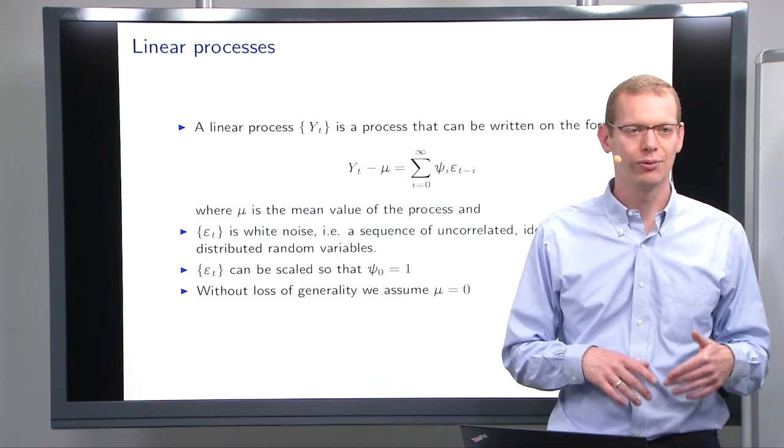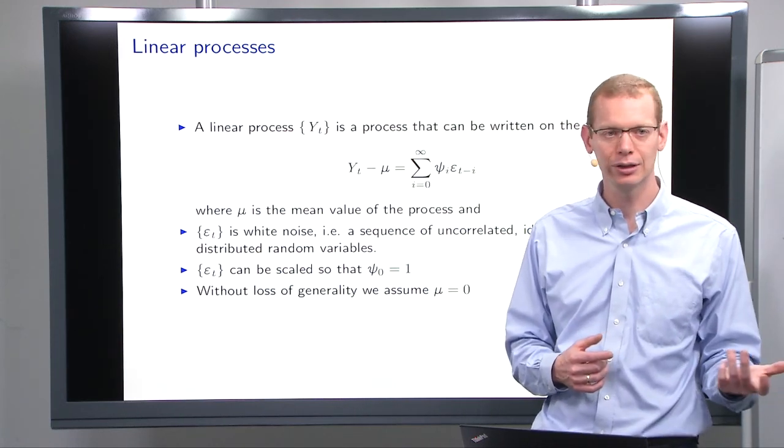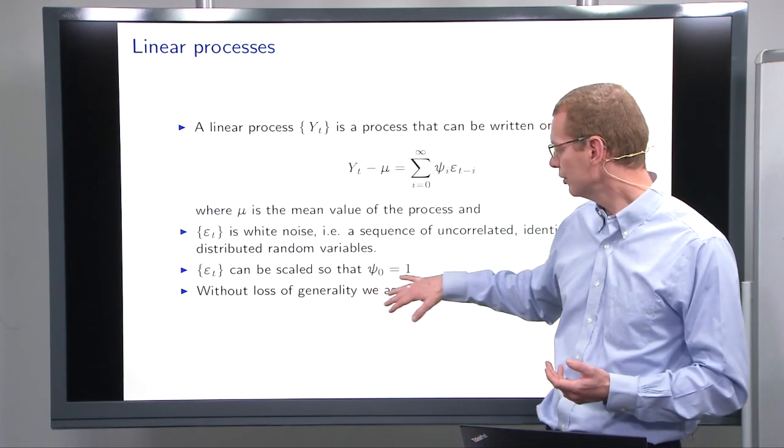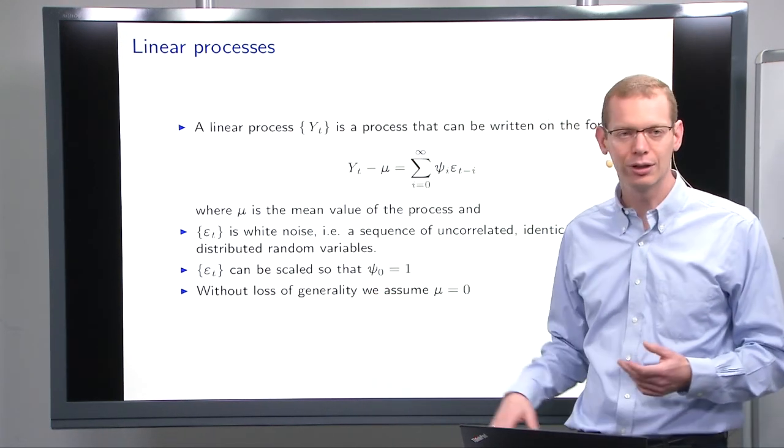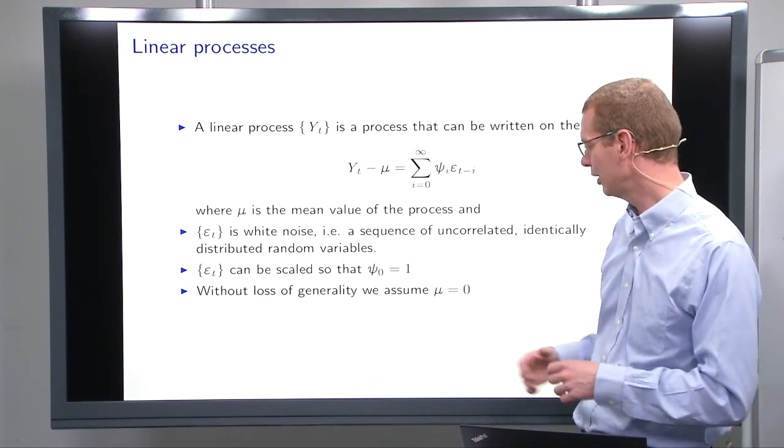What we'll typically do is scale by choosing the variance of epsilon such that ψ_0 equals one, because otherwise we have one too many degrees of freedom to estimate.